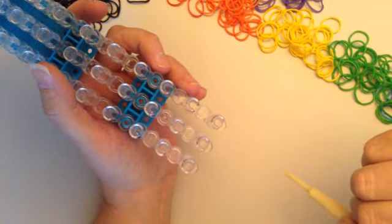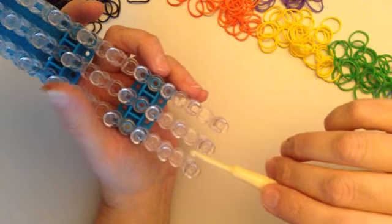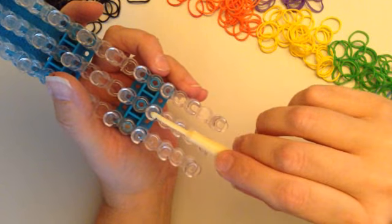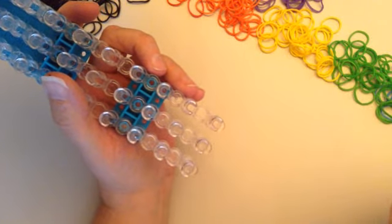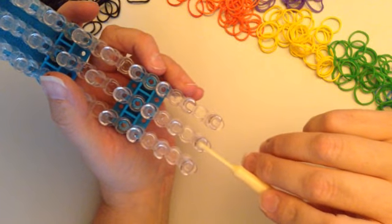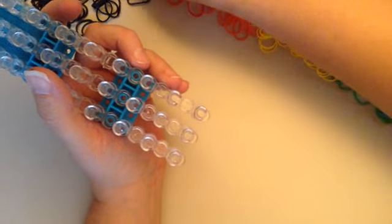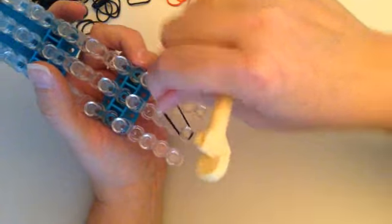What you're going to do is you're going to start with your loom and you're going to use six pins. So I'm going to be using these two rows of six. I'm going to start on the middle pin right here and I'm going to put black.